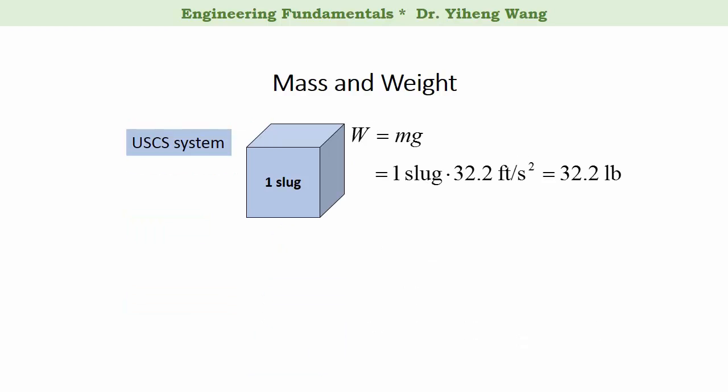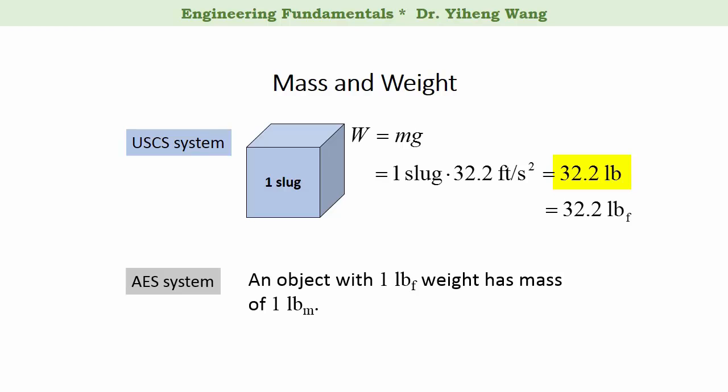However, according to the American engineering system AES, if an object has a weight of one pound force, then it must have a mass of one pound mass. Therefore, in the previous example, for an object with a mass of one slug, we calculated that its weight is 32.2 pound, which is the same as 32.2 pound force. That means that the mass of this object must be 32.2 pound mass, and that is the relation between the two units slug and pound mass.